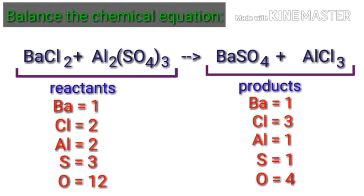On the product side, there are 1 barium atom, 3 chlorine atoms, 1 aluminum atom, 1 sulfur atom, and 4 oxygen atoms. The number of atoms is not balanced on both sides.